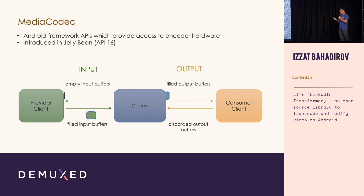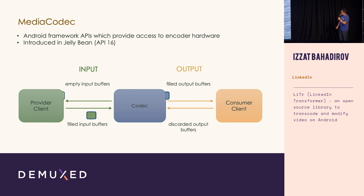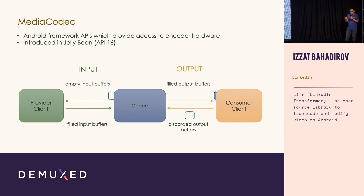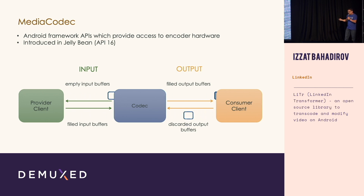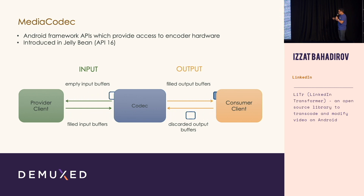Fortunately, Android gives you access to that hardware through MediaCodec APIs, introduced about seven years ago — I remember being at the Google I/O talk when they were introduced. The way you use MediaCodec is you instantiate an instance by asking the framework what you want to do, like decode H.264. If what you're asking is supported, you will get an instance, and you talk to it using buffer queues.